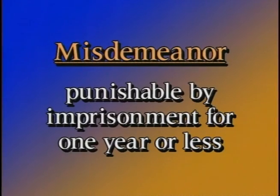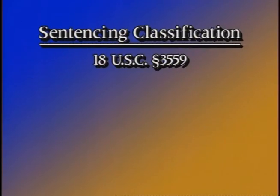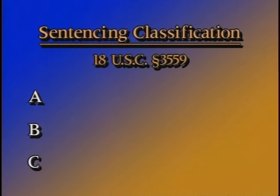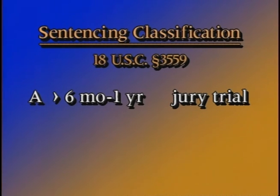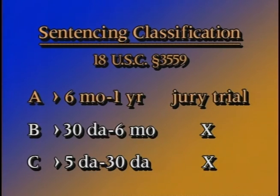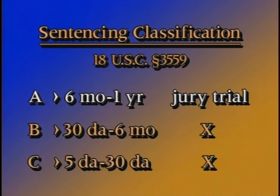A misdemeanor is an offense punishable by imprisonment for a term of one year or less. Under Title 18, Section 3559, misdemeanors are classified as Class A, B, or C depending on the maximum term of imprisonment allowable upon conviction. The authorized punishment for a Class A misdemeanor is a maximum term of one year or less but more than six months. If the offense is a Class A misdemeanor, the defendant has a right to a jury trial because he or she is exposed to imprisonment in excess of six months. There is no right to a jury trial for Class B and C misdemeanors, which carry a maximum potential sentence of six months or less. Whenever I refer to the right to a jury trial or waiver of that right, I'm talking about Class A misdemeanors.